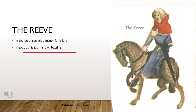The Reeve manages a manor — like the person in charge of everything in the house, hiring and firing people and keeping everything within budget, similar to what you'd see in Downton Abbey. However, being in charge of finances makes it very easy for him to embezzle money from his master, and his master remains none the wiser.